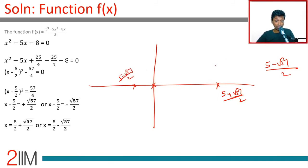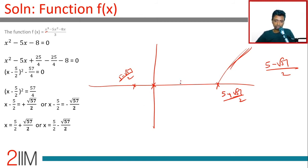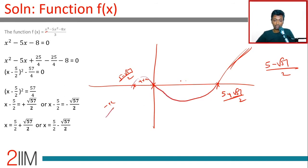Now the curve will be zero at these three points. The x cubed term dominates as we go to larger values, so from the rightmost root onward it increases — putting in 100 gives a large number, 1000 an even bigger number. Between the two outer roots, the curve is negative. To the left of the leftmost root it is positive. So the curve rises, dips below zero, rises again — a shape like this.